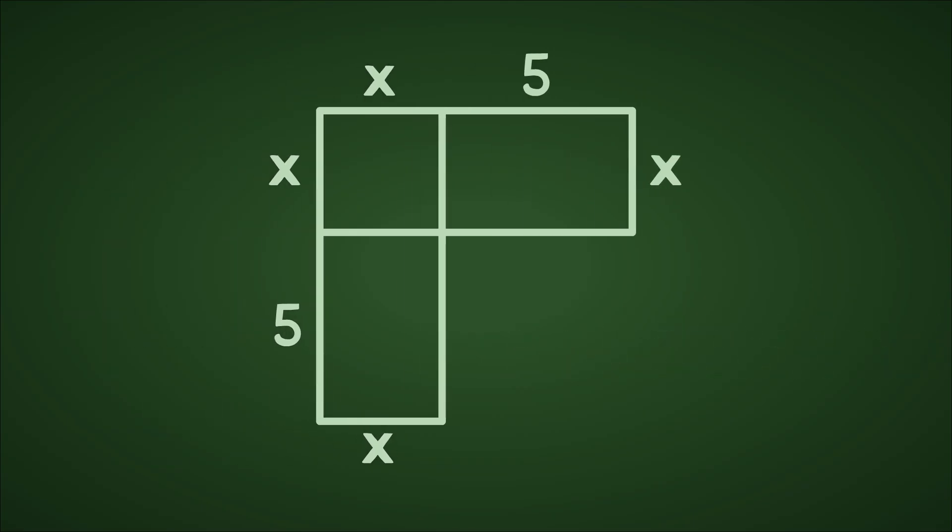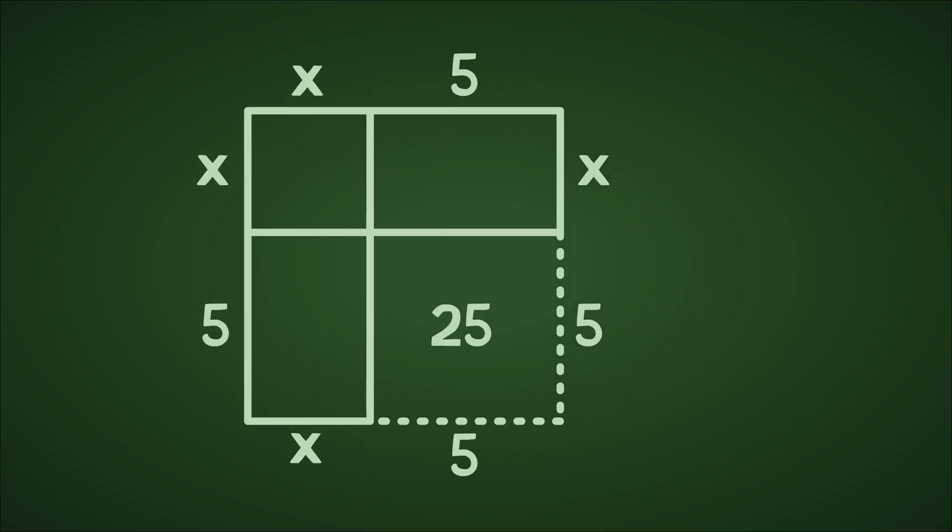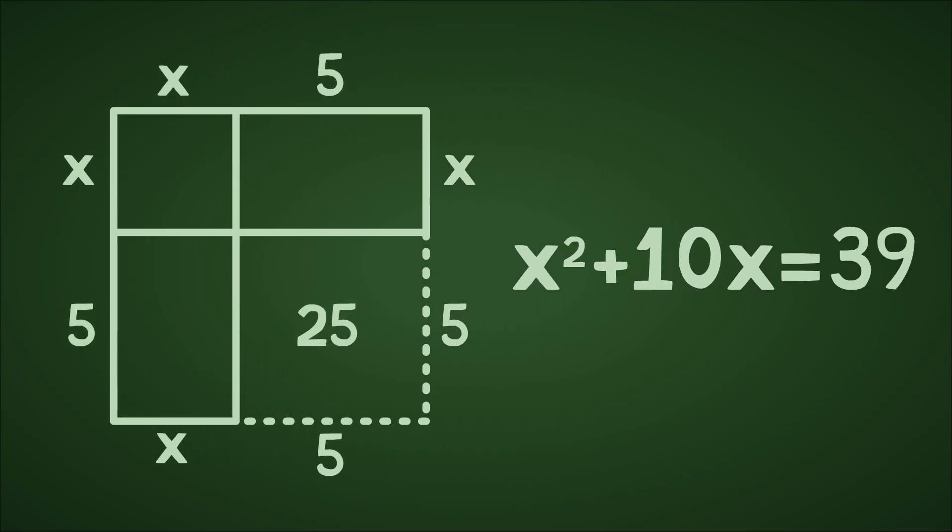But you'll notice that our square is no longer square. Now there's a hole in the bottom corner. But luckily, we know just how big that hole is. It's exactly five by five, or 25 units large, because of how we constructed the rest of the square. But what do we also know from our original equation? We know that x squared plus 10x, or everything but that little missing square here, equals 39.